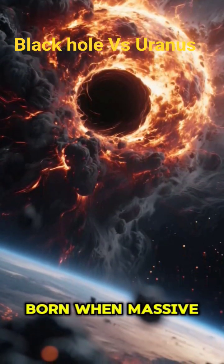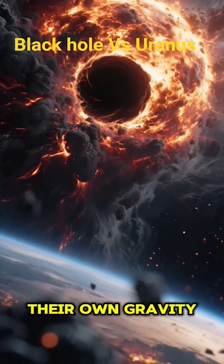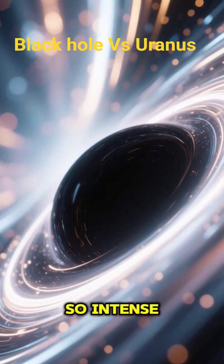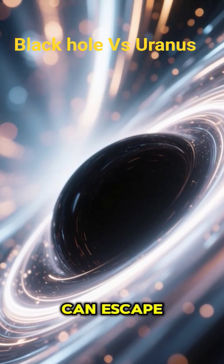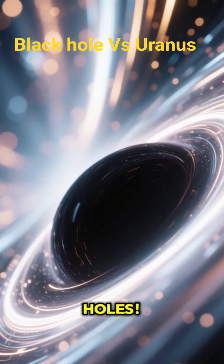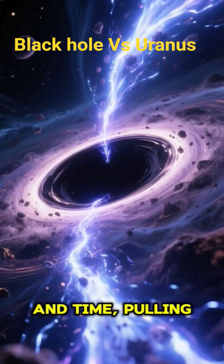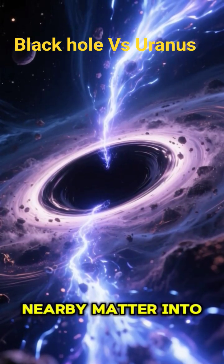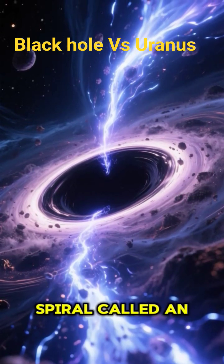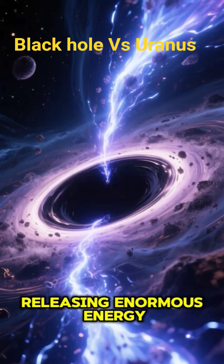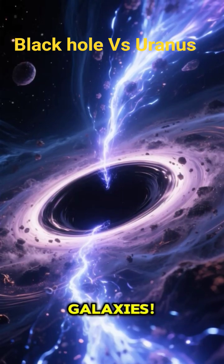Black holes are born when massive stars collapse under their own gravity. Their gravity is so intense, not even light can escape. That's why we call them black holes. But here's the wild part. Black holes can warp space and time, pulling nearby matter into a swirling death spiral called an accretion disk, releasing enormous energy that outshines entire galaxies.